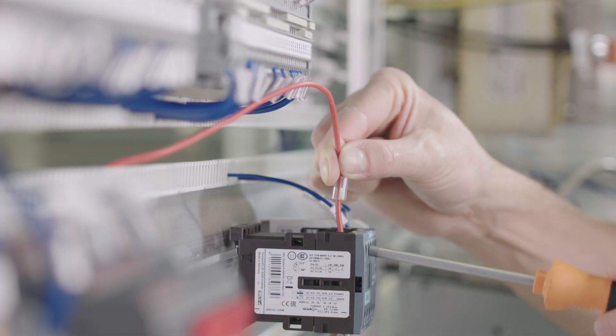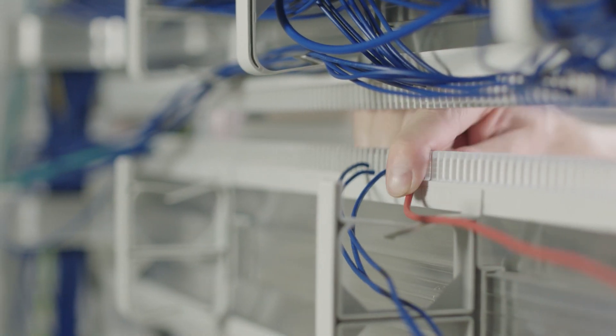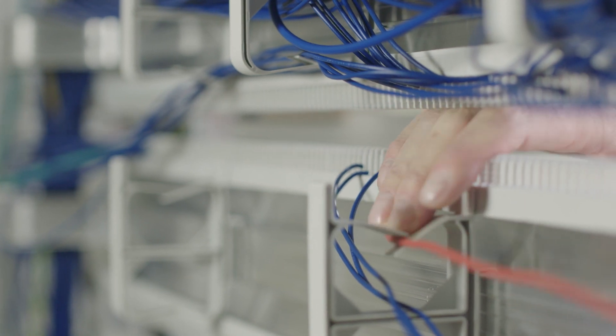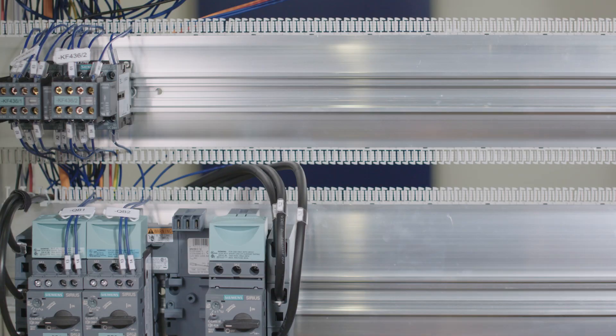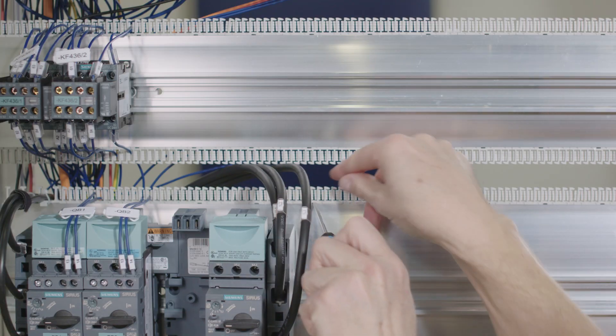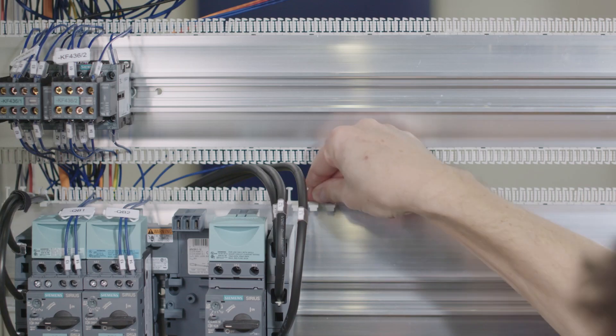Mounting of the units and even more importantly wiring are always done from the front. Wire holders prevent cross-wiring and simplify rewiring. Through the use of different easy-to-exchange comb segments, even cables with a larger outer diameter can be easily fixed.